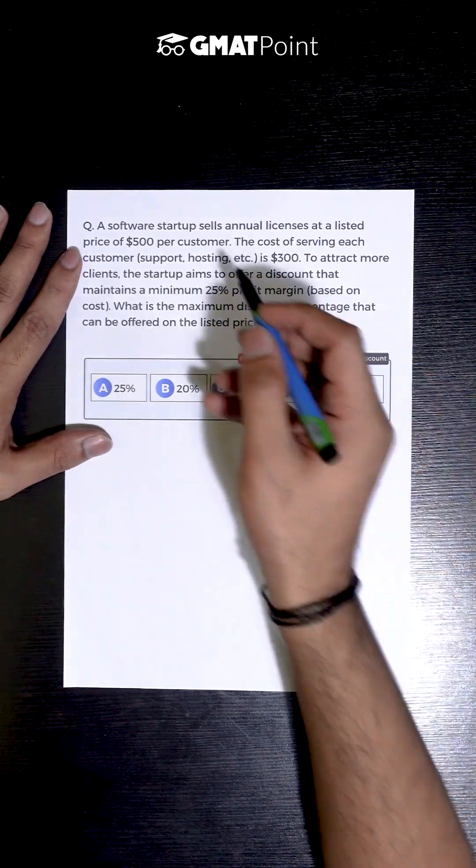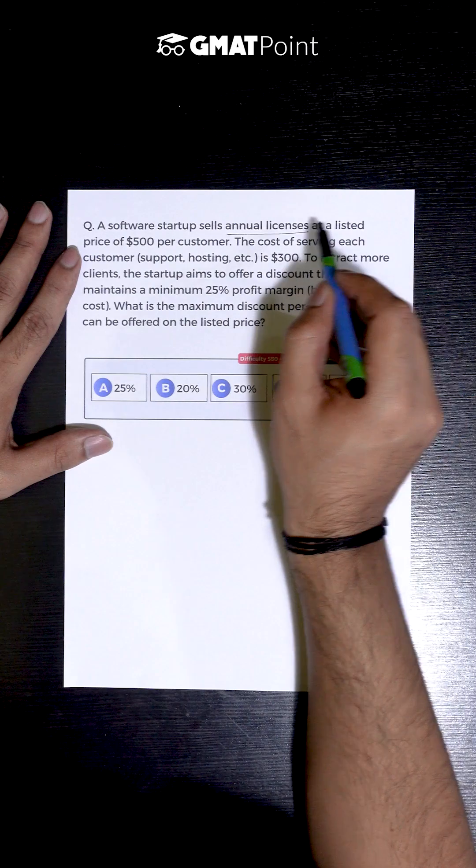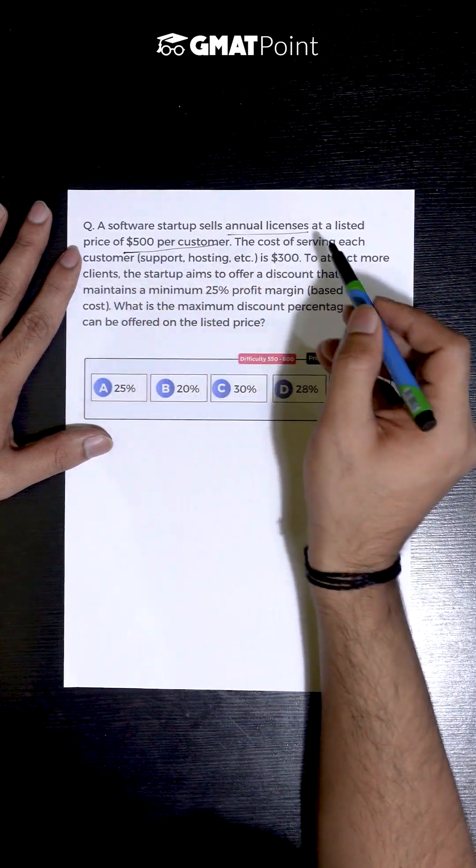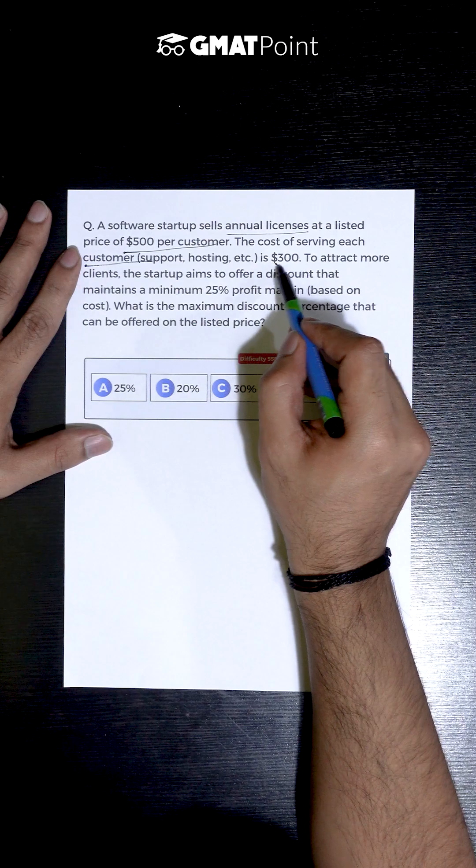Let us see how to solve this question. A software startup sells annual licenses at a listed price of $500 per customer. The cost of serving each customer is $300.